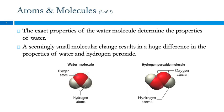The exact properties of water are determined by the properties of the water molecule. If we change the water molecule, we change the substance. So here we have water. This is a hydrogen peroxide molecule. The difference here is fairly subtle. This has two oxygen atoms instead of one.